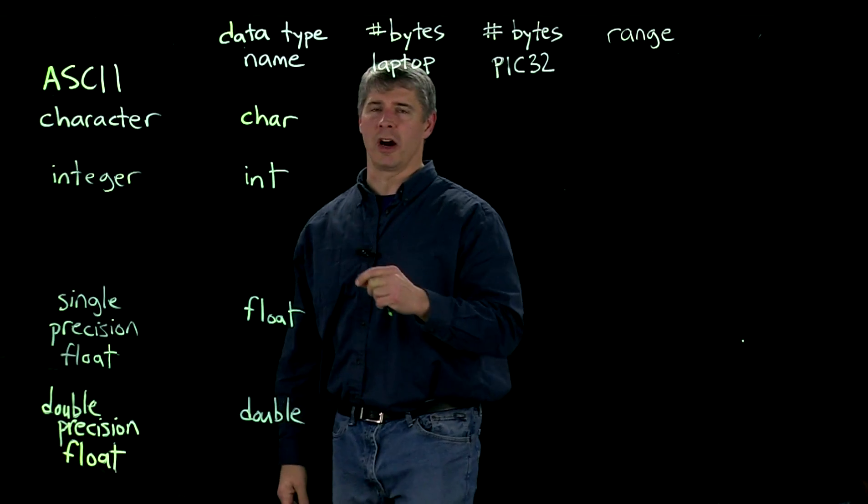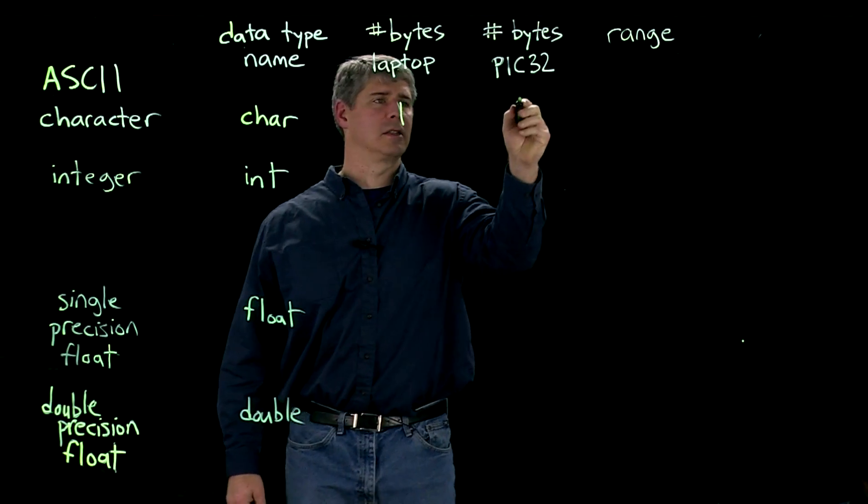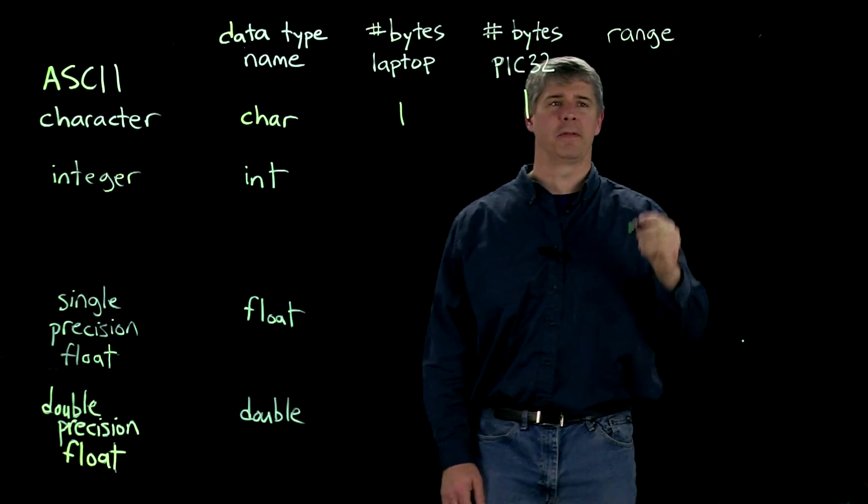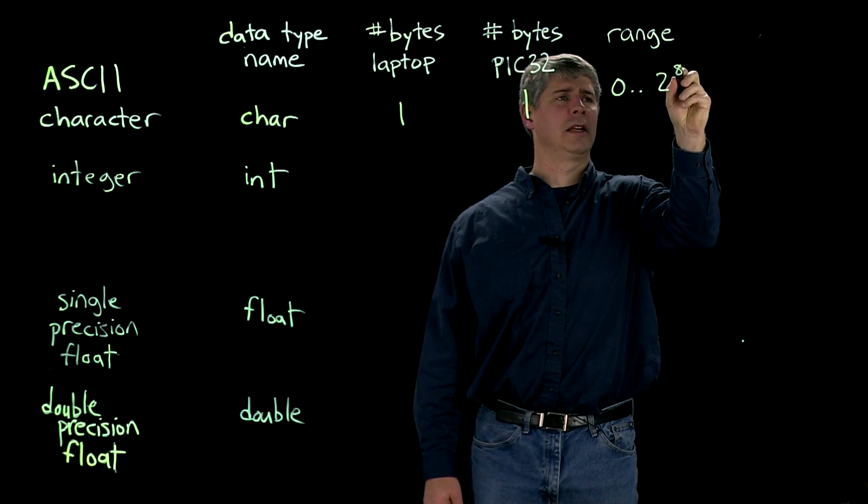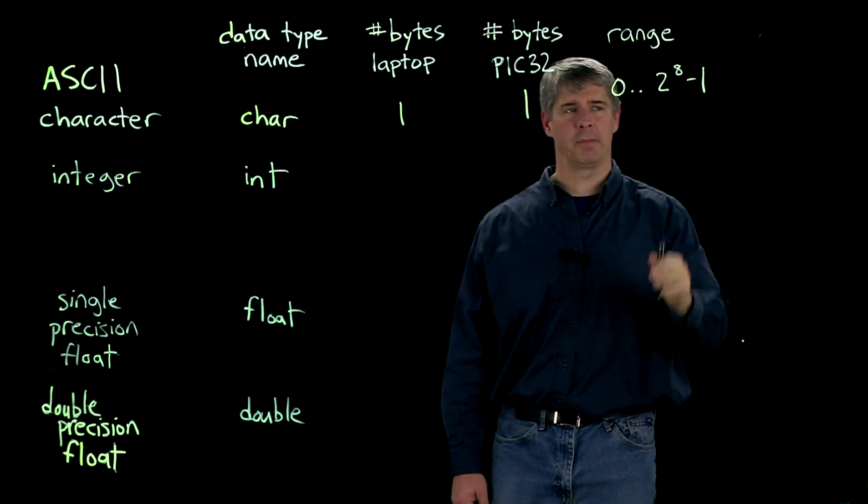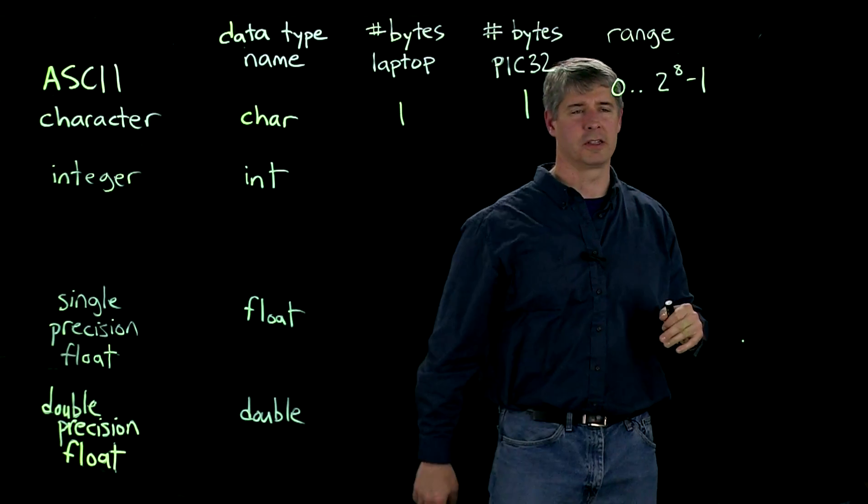So, let's start with char. On all systems, char uses one byte, and because it uses one byte, it can represent values zero to 2 to the 8 minus 1. There's eight bits, so it can represent up to 2 to the 8 minus 1 because zero is also represented.